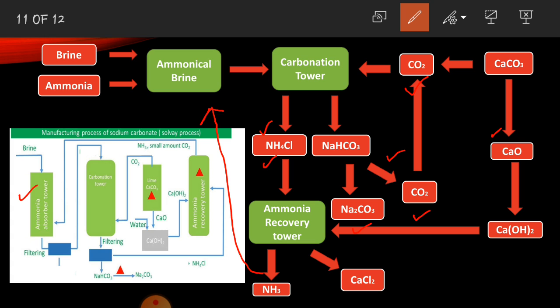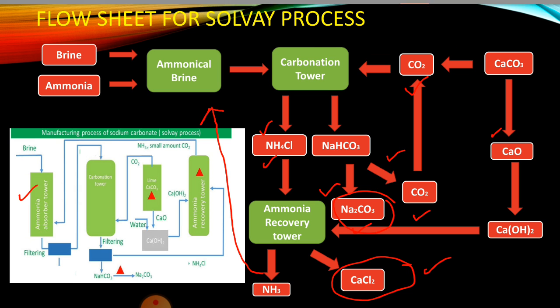Looking at the flow chart, the major outputs of the Solvay process are sodium carbonate and calcium chloride. All other chemical substances formed during the process are reused or recycled.